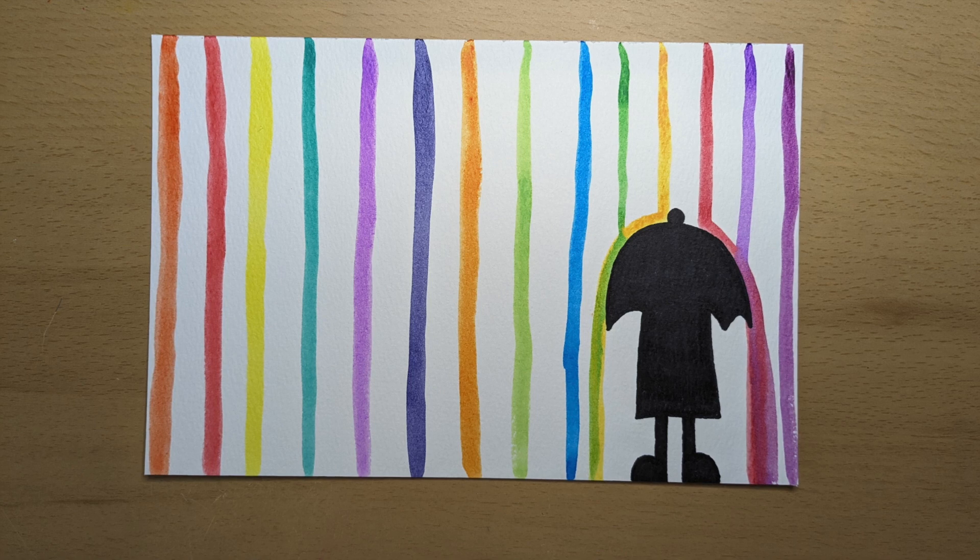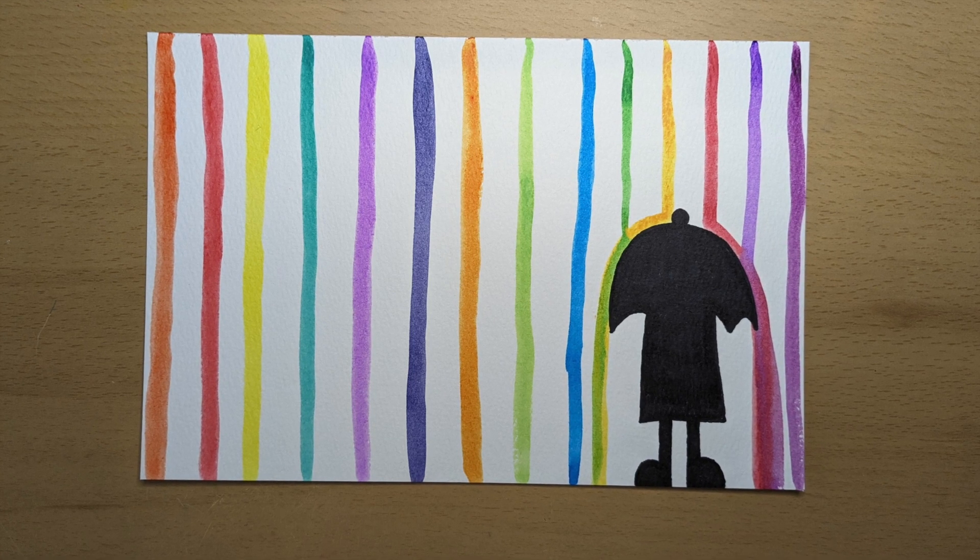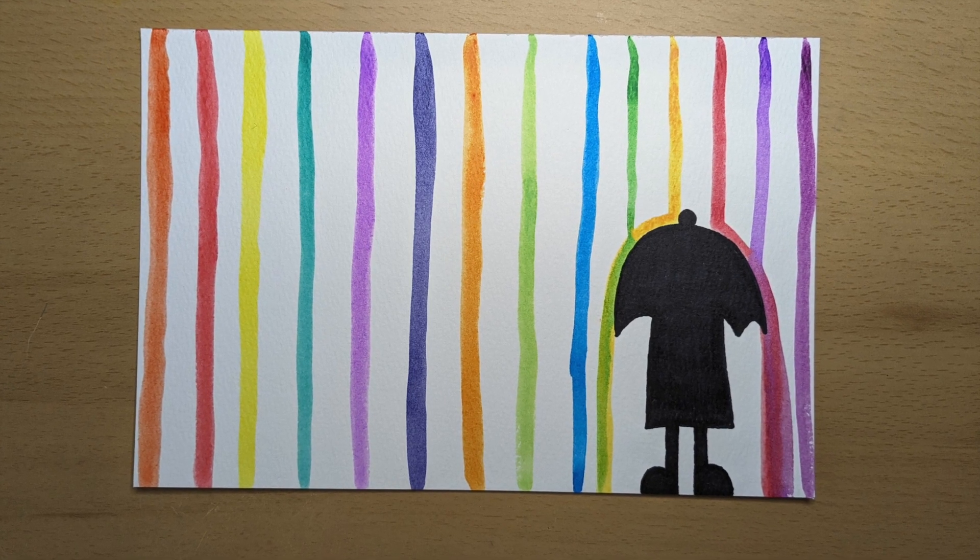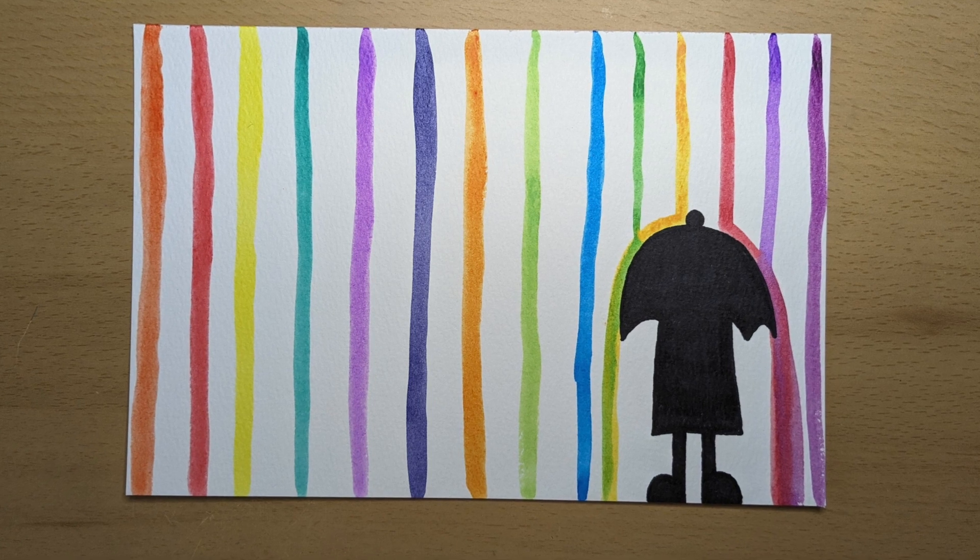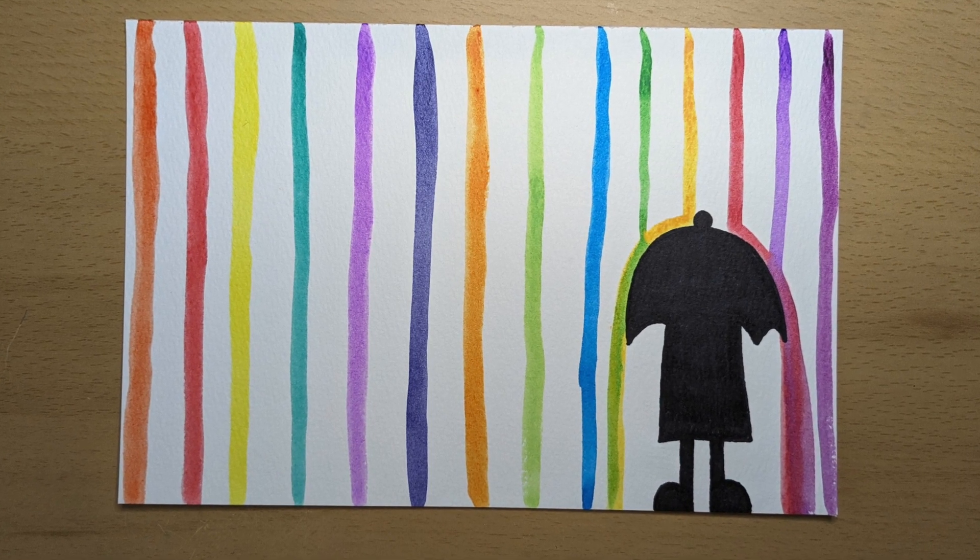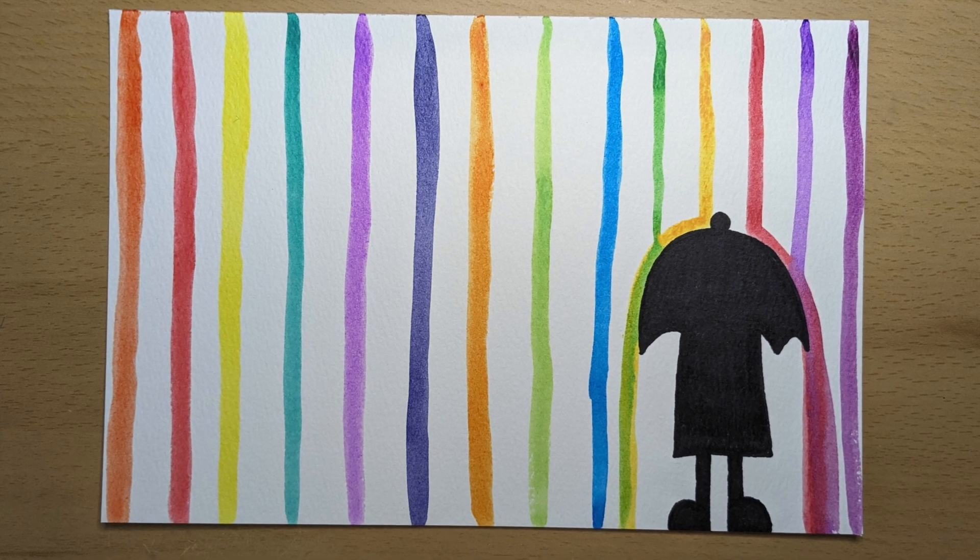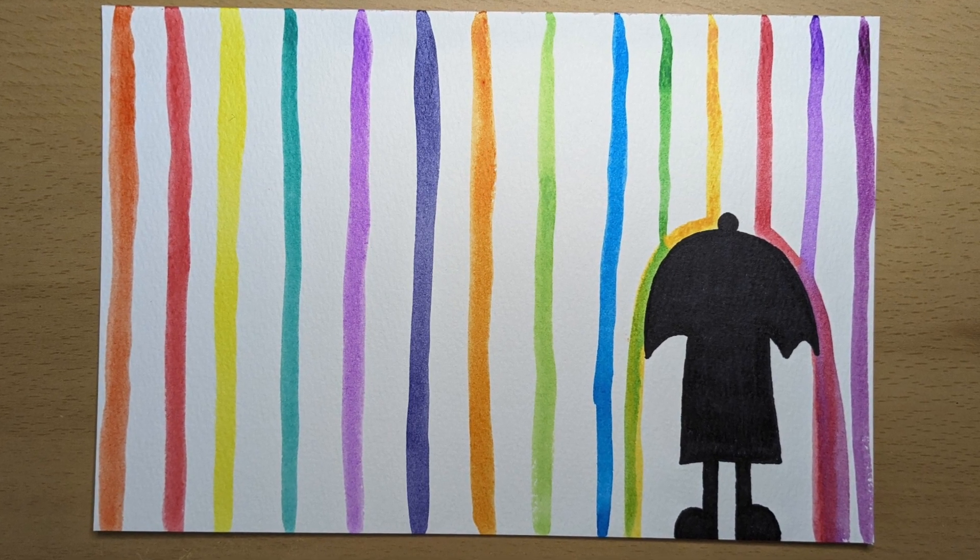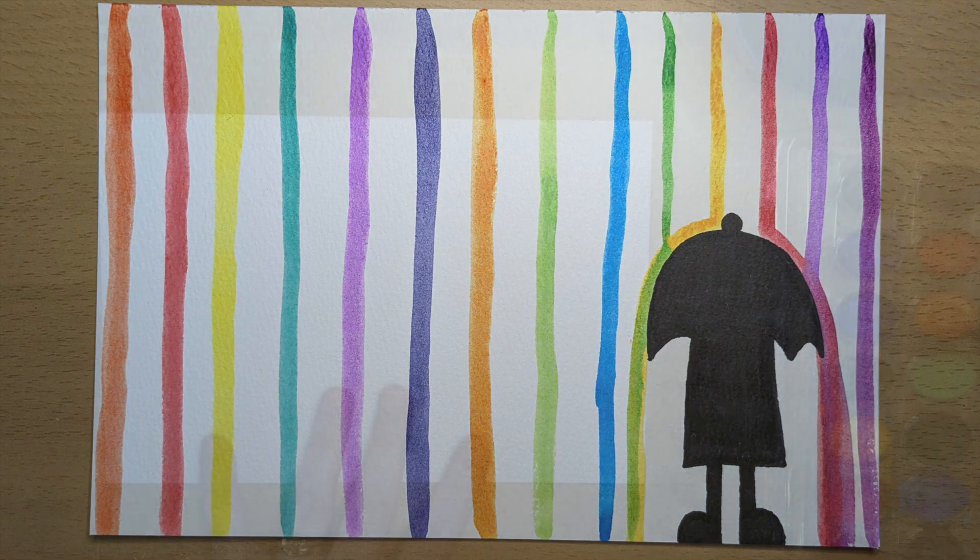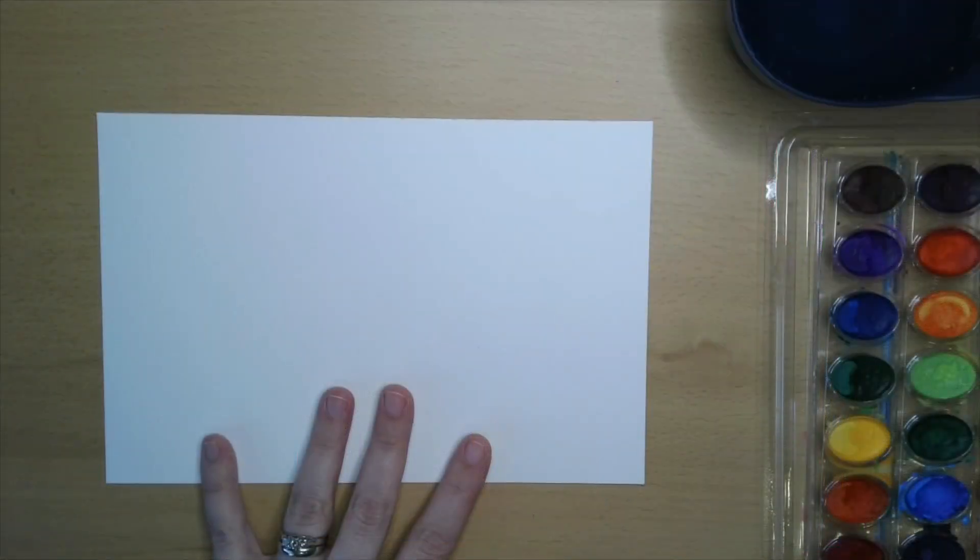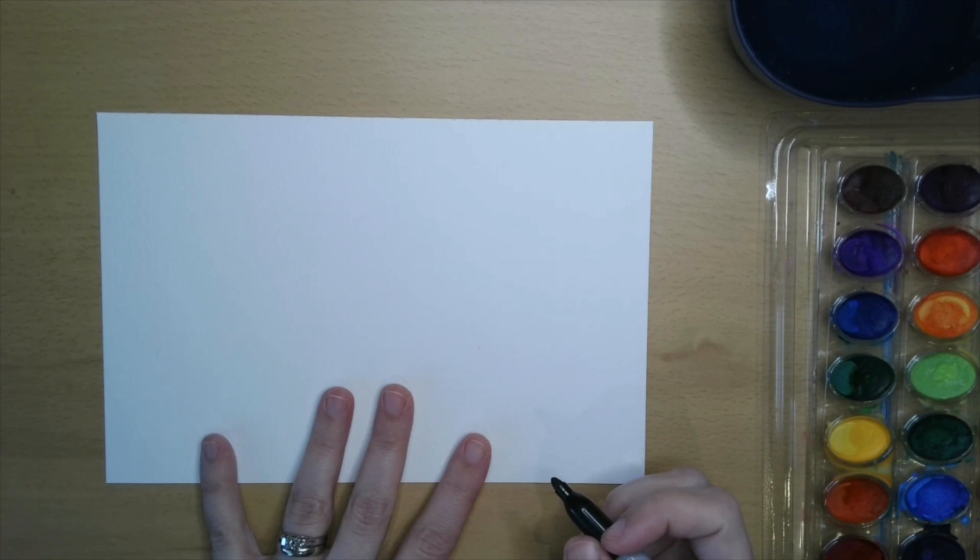Hi friends! Today we're gonna be making a rain picture using lots of bright and vibrant colors to make it look really bright and beautiful on a day that could be really gray and dreary normally. To start, I'm gonna use a Sharpie to draw myself and my umbrella, then I'm gonna use watercolor paints to make the rain.